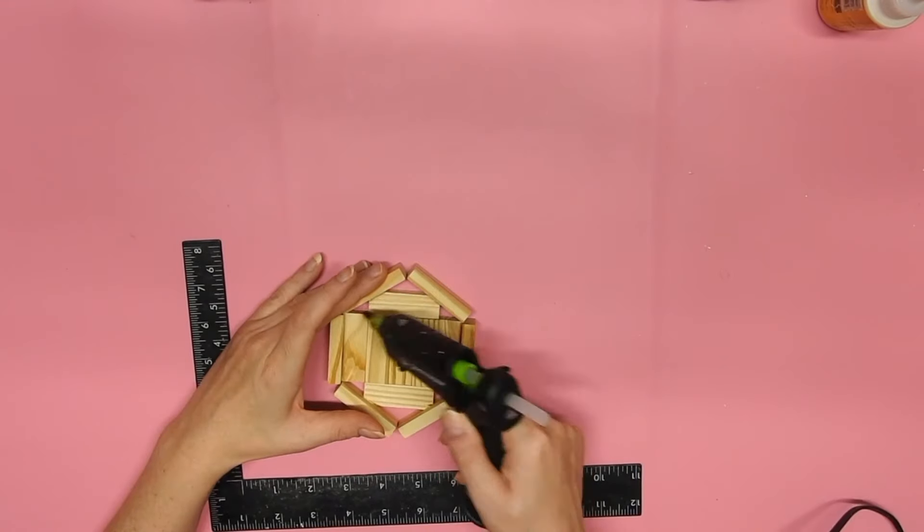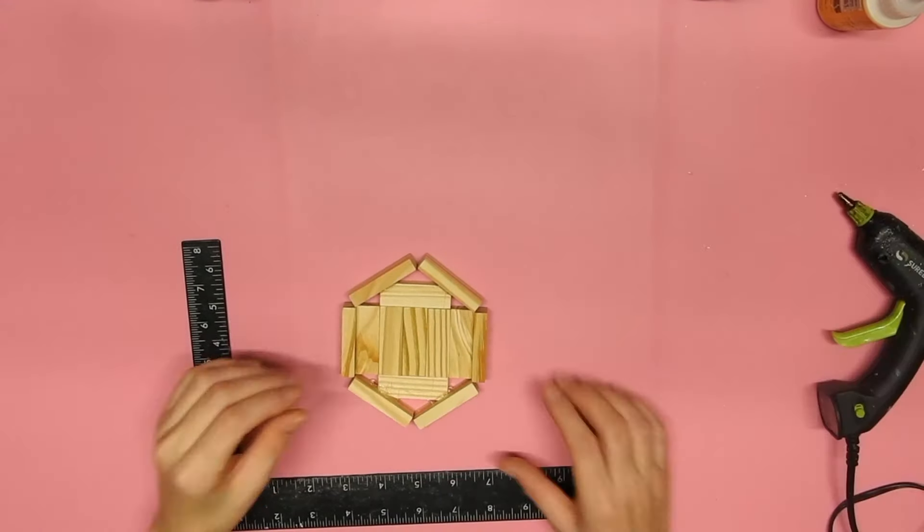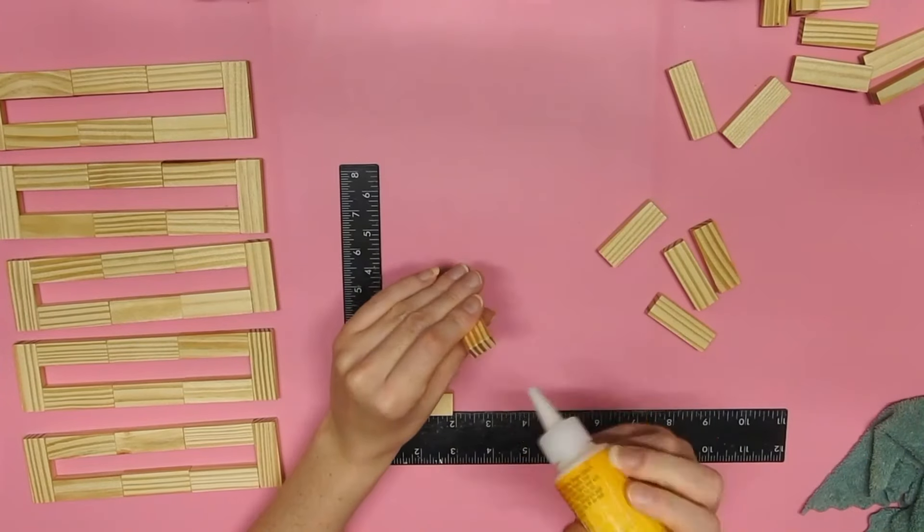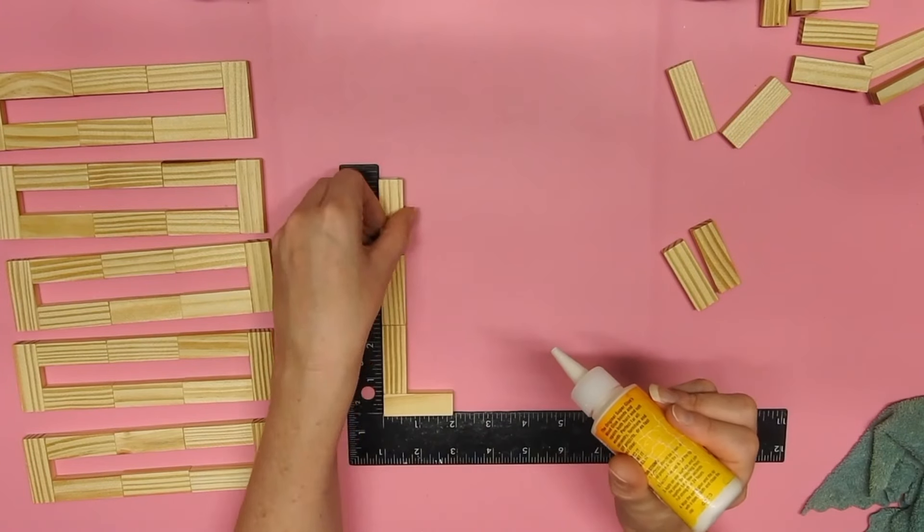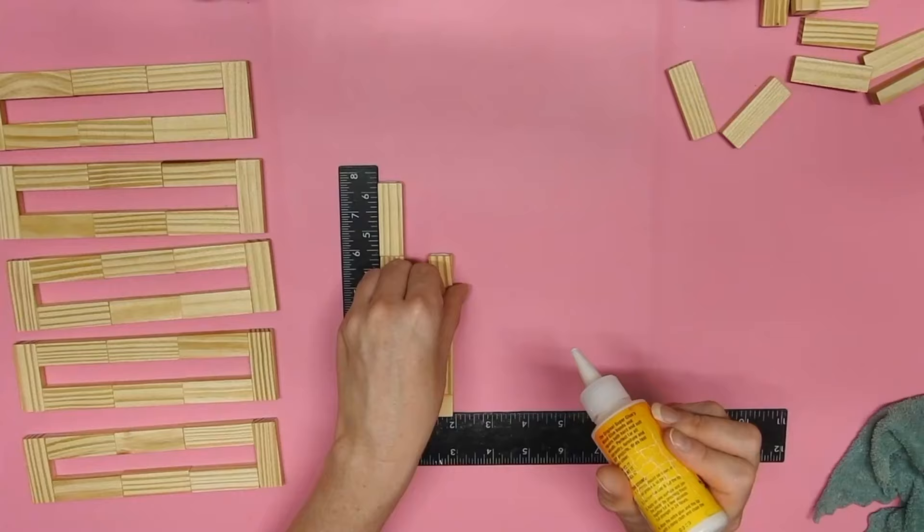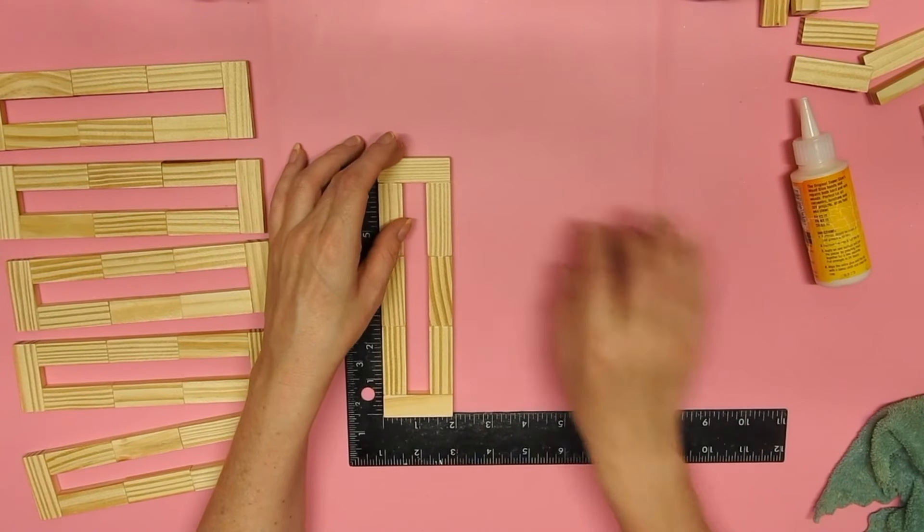Once that dried I just reinforced it with some hot glue on the top and the bottom and now I am making the sides. I just put one tower block at the bottom and then three up each side and then another one at the top and I made six of those all together.